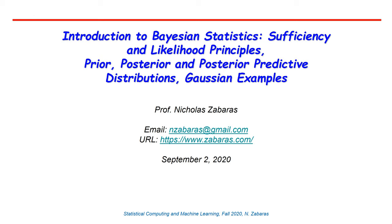Good morning everybody. We will continue today our lectures on statistical computing and machine learning, and this is going to be our first lecture where we formally start discussing Bayesian inference. I will begin with a discussion on the sufficiency and likelihood principles, reviewing maximum likelihood estimation, and then formally move to define the prior, posterior, and predictive distribution, giving some examples from the Gaussian case. The general examples related to inference for the multivariate Gaussian will be reviewed in the follow-up lecture, so this will be a series of two lectures.